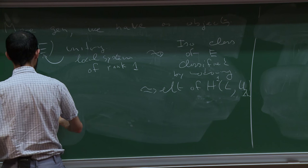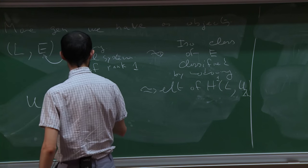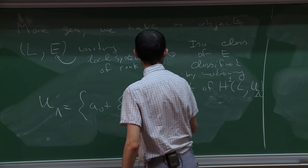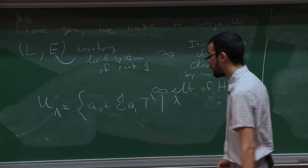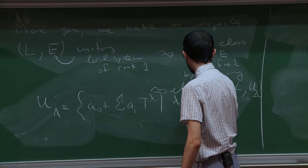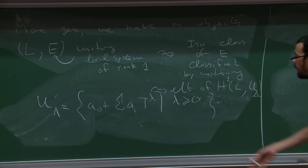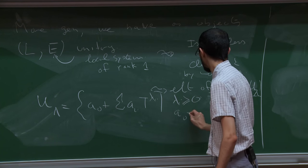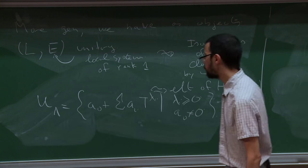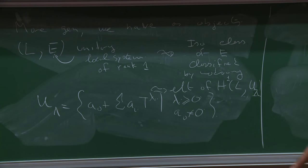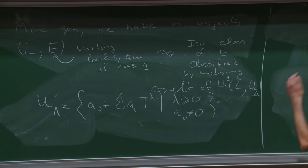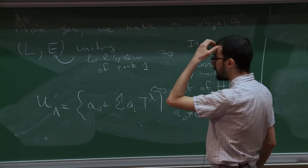In the rank one case, the monodromy is an element of H¹(L) with coefficients in the unitary group. Now if we were working over the complex numbers, I would just write ℝ/S¹. But if we were working over the Novikov ring, we can't do that. S¹ is the set of things of norm one. So we need the analogous thing — the set of things of norm one over the Novikov ring. That is just a set of expressions of the form a₀ + Σ aᵢ t^{λᵢ}, where λᵢ are real numbers going to plus infinity with λᵢ ≥ 0, and a₀ is nonzero. These form a group under multiplication — that's your unitary group.